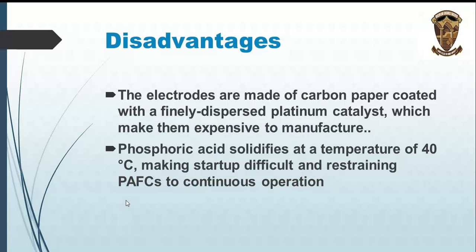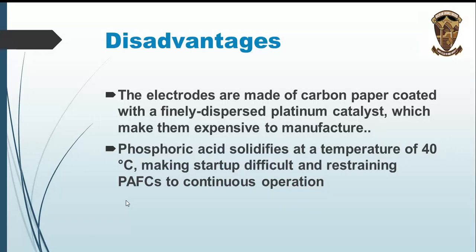Disadvantages of the phosphoric acid fuel cell: the electrodes are made of carbon paper coated with finely dispersed platinum catalyst, making them expensive to manufacture — cost is a significant factor. Phosphoric acid solidifies at a temperature of 40 degrees Celsius, making startup difficult and restricting the cell to continuous operation. Thus, the phosphoric acid fuel cell has difficulty with startup.